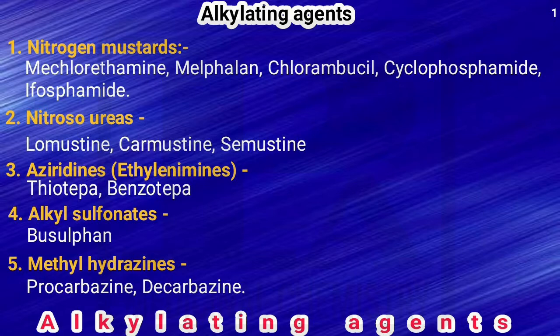First are alkylating agents. The alkylating agents are classified into nitrogen mustards, nitroso ureas, aziridines, alkyl sulfonates, and methyl hydrazines. Examples for nitrogen mustards: mechlorethamine, melphalan, chlorambucil, cyclophosphamide, ifosfamide. Examples for nitroso ureas: lomustine, carmustine, and semustine. Aziridines, otherwise called ethylene imines — examples are thiotepa and benzotepa.